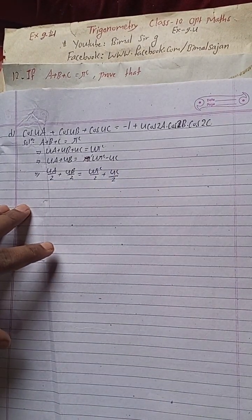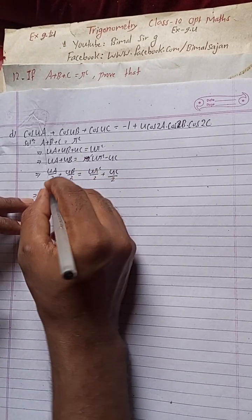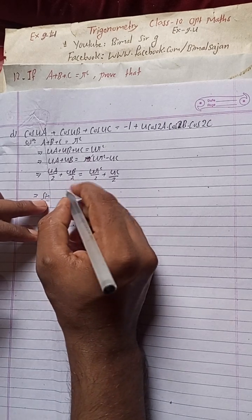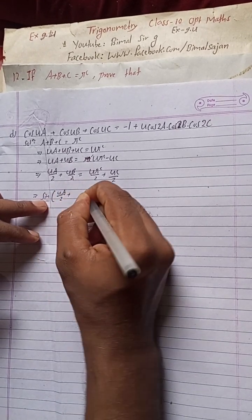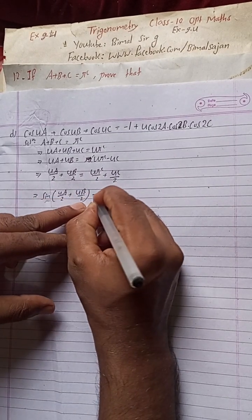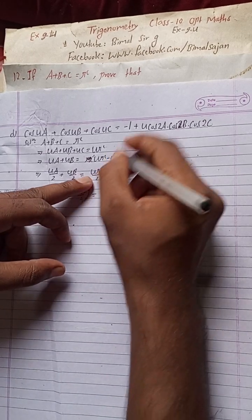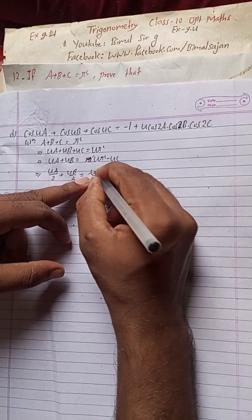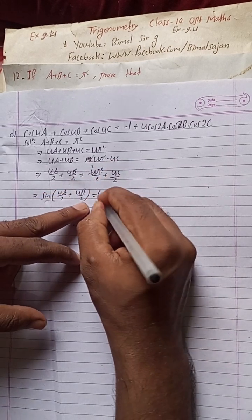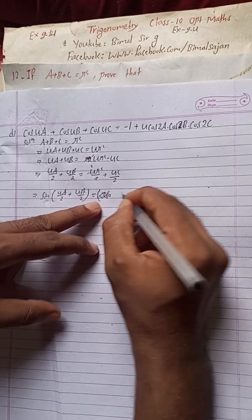Taking cosine of both sides: cos(4a/2 + 4b/2) equals cos(4pi/2 - 4c/2). On the right side, 4pi divided by 2 gives 2pi, which corresponds to 360 degrees — one full rotation. So cos(2a + 2b) equals cos(2pi - 2c), and since 2pi means a full cycle, cos values remain positive in the first quadrant.